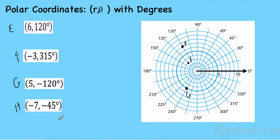For point H: negative 45 degrees and negative 7. Going negative 45 takes me to 315 degrees, then with a negative 7 radius I go the opposite direction to 135 degrees and count 7 out — 1, 2, 3, 4, 5, 6, 7. That gives us point H. So we've done some easy plotting of points in polar coordinates.